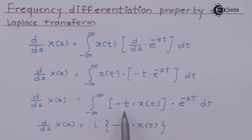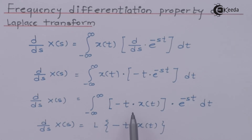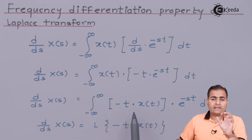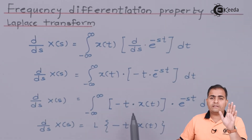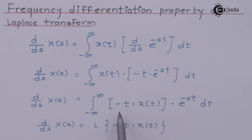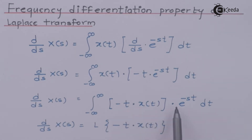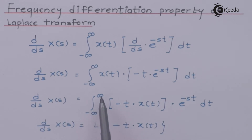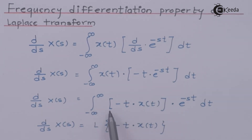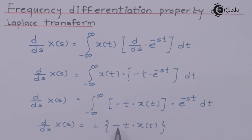If I consider this as my whole input, then according to the Laplace transform, if we apply Laplace on any continuous time signal X(T), it is always multiplied with e to the power minus ST and then integrated over the range of minus infinity to infinity. So this satisfies the definition of the Laplace transform, and I am going to replace this whole term by the Laplace transform of minus T times X(T).